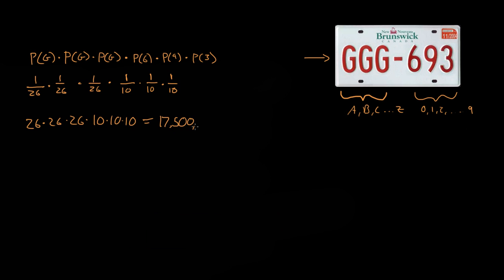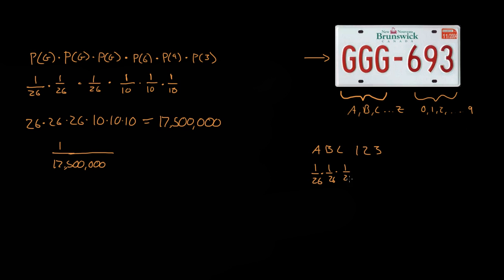So really, the probability of getting this one plate is 1 out of 17.5 million. It is really unlikely to get this plate. Let's find the probability of getting a plate that was A, B, C, 1, 2, 3. Getting an A is 1 out of 26, getting a B is 1 out of 26, getting a C is 1 out of 26, getting a 1 is 1 out of 10, getting a 2 is 1 out of 10, and getting a 3 is 1 out of 10. So this probability is again 1 out of 17.5 million — getting this one is extremely remote.